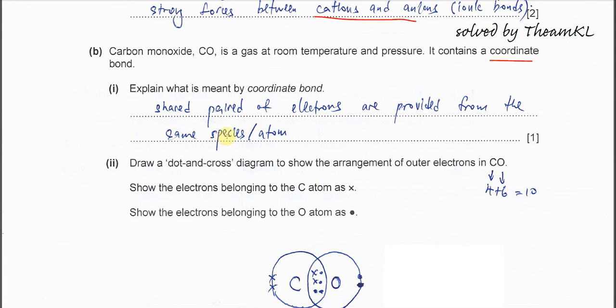One atom shares a pair of electrons to other species. Normally it is one each, but when it is the dative bond or coordinate bond, the two electrons are shared by the same species. This we call coordinate bond.